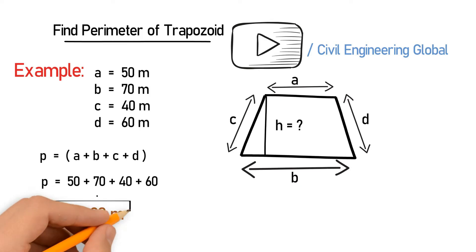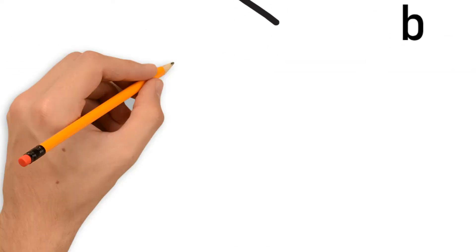So this is the method with which you can calculate the parameter of a trapezoid. Thanks.